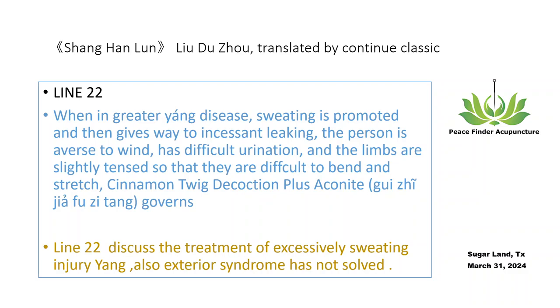The main problem is leaking sweat, so we use Guizhi decoction to harmonize ying and wei, relieve muscle and dispel wind, and add aconite to support yang, warm the meridians, stabilize the exterior, and then stop sweating.